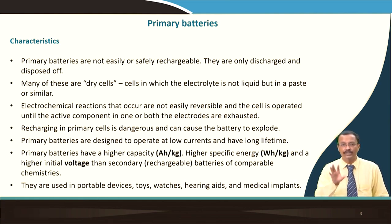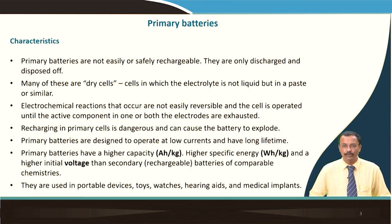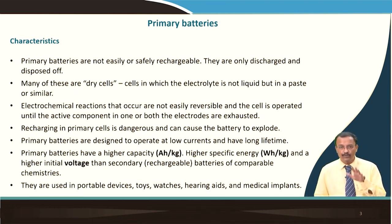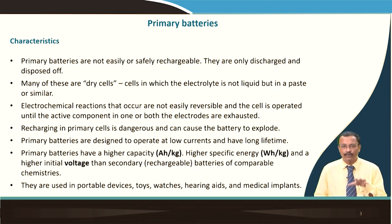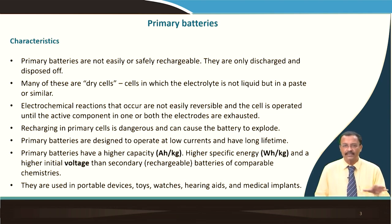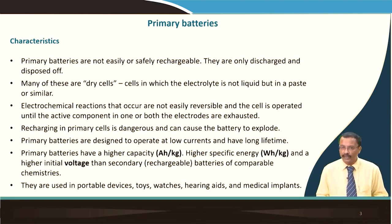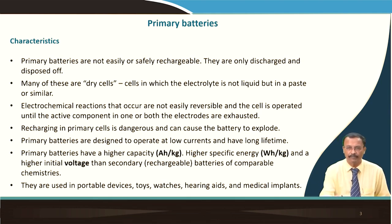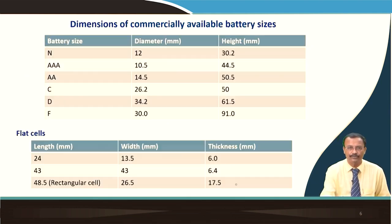Do not worry too much about the terminology at this point. Primary batteries are usually used for portable devices, toys, watches, hearing aids, and medical implants — no heavy-duty use. As shown, consumer electronic applications are where primary batteries are typically used.